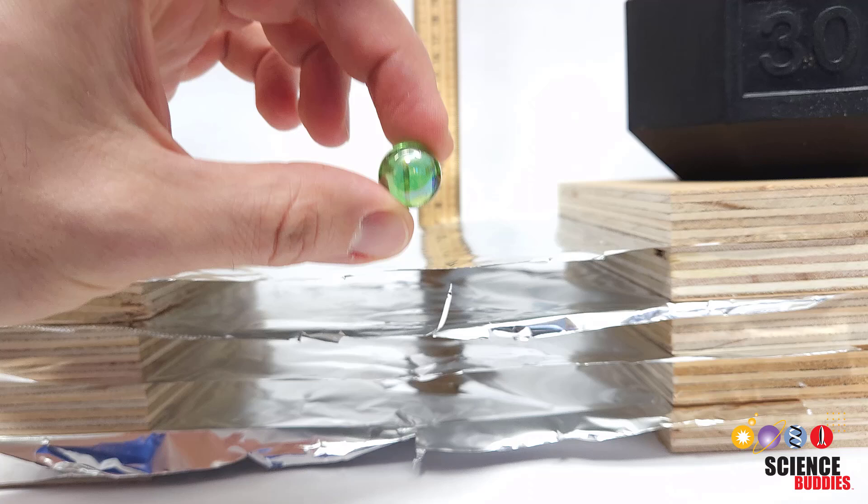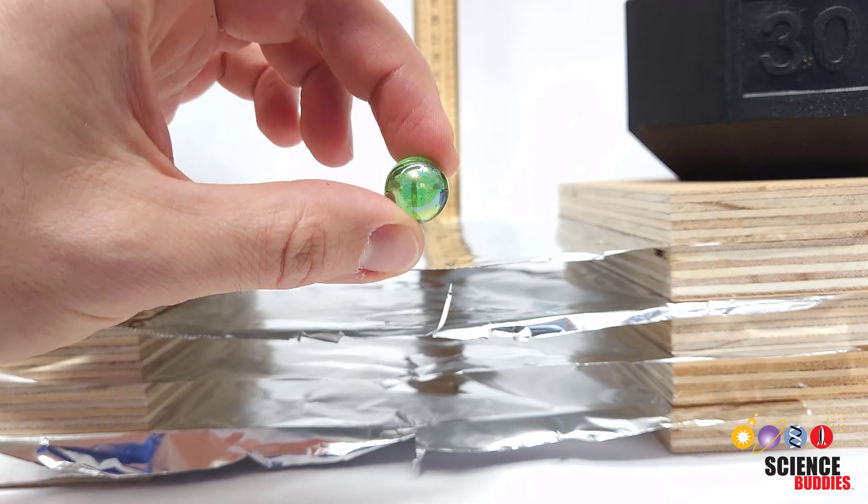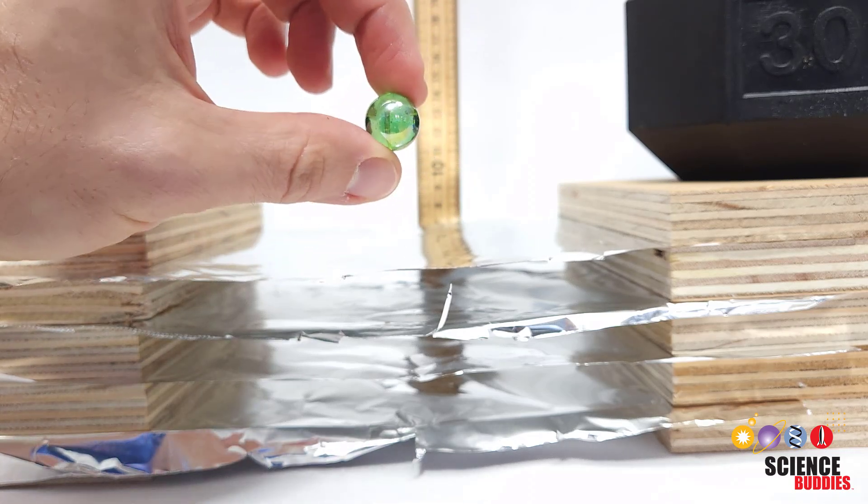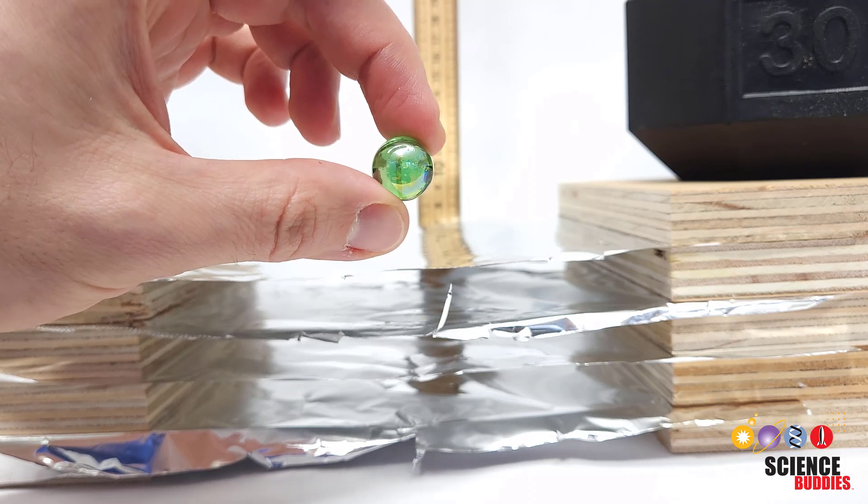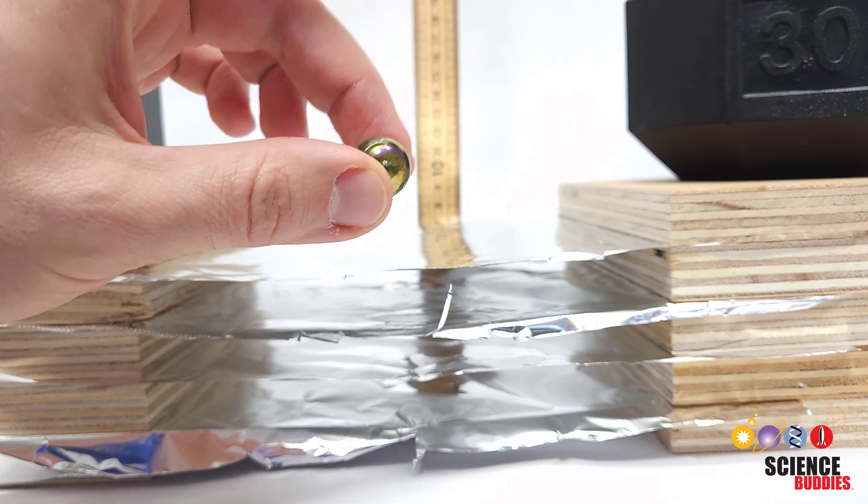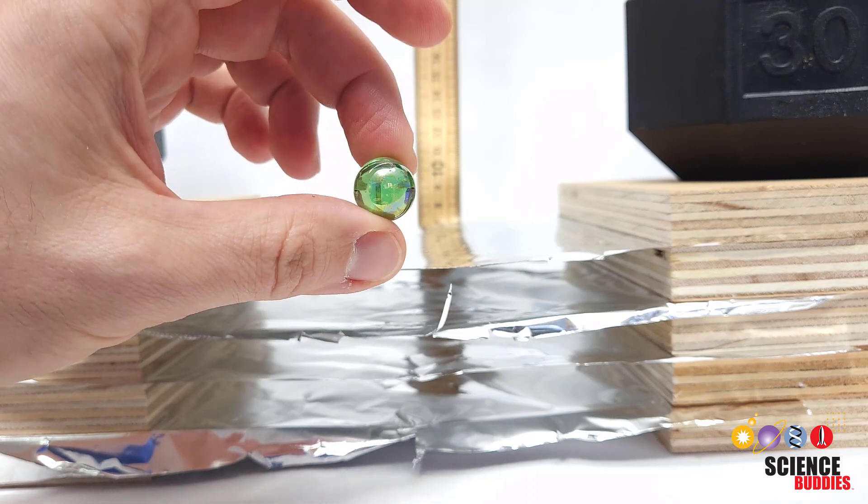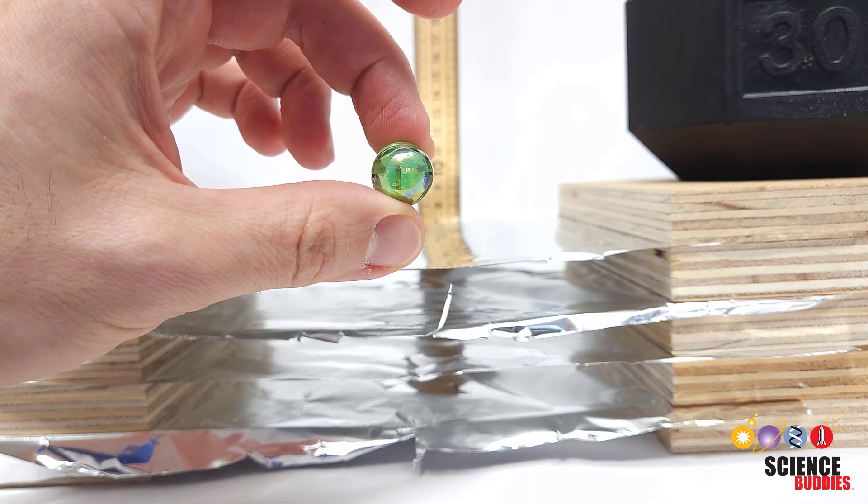You're also going to need an object to drop. Something like a marble, ball bearing, or small rock is a good way to get started. Now these aren't going to break apart on impact like real space debris because they're not traveling thousands of miles per hour, but they're still a good way to demonstrate the concept and do an experiment with a Whipple shield. You could also try out something that might break apart on impact like clumps of dirt, sand, or clay.